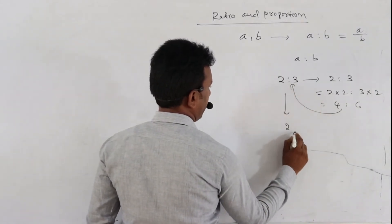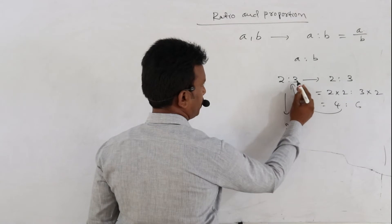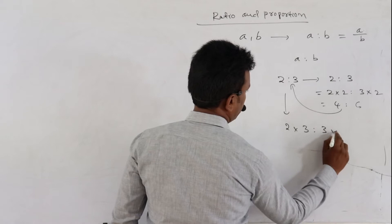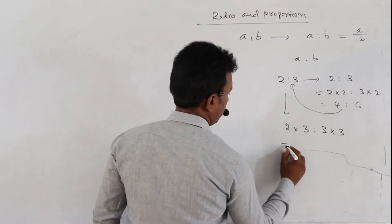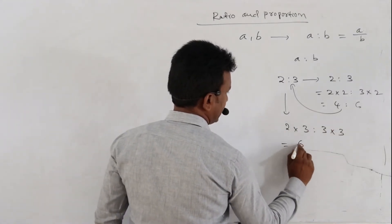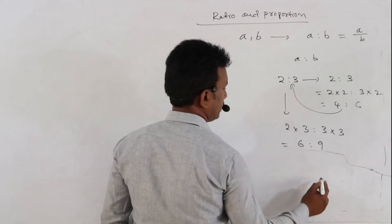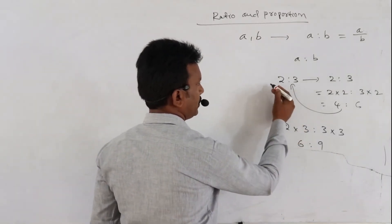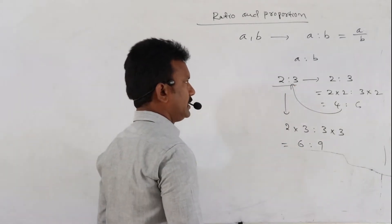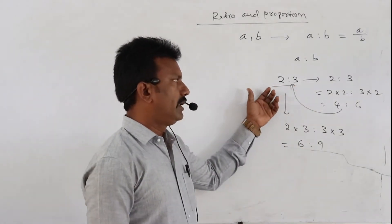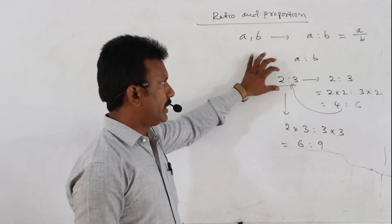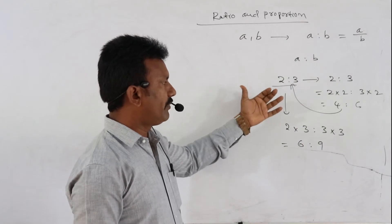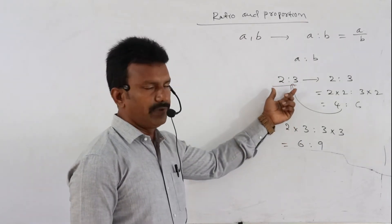In the same way, we can multiply our ratio 2 is to 3 by another fixed constant, say 3, to both numbers. So 2 into 3 is 6, and 3 into 3 is 9. So 6 is to 9 is also equivalent to 2 is to 3. From this, we define one principle: given a ratio 2 is to 3, we can define an infinite number of equivalent ratios to the given ratio.